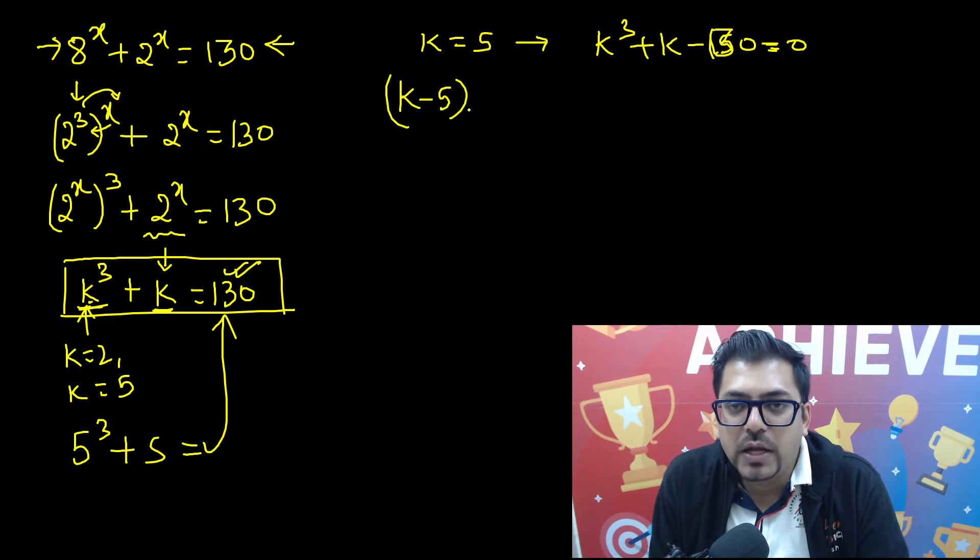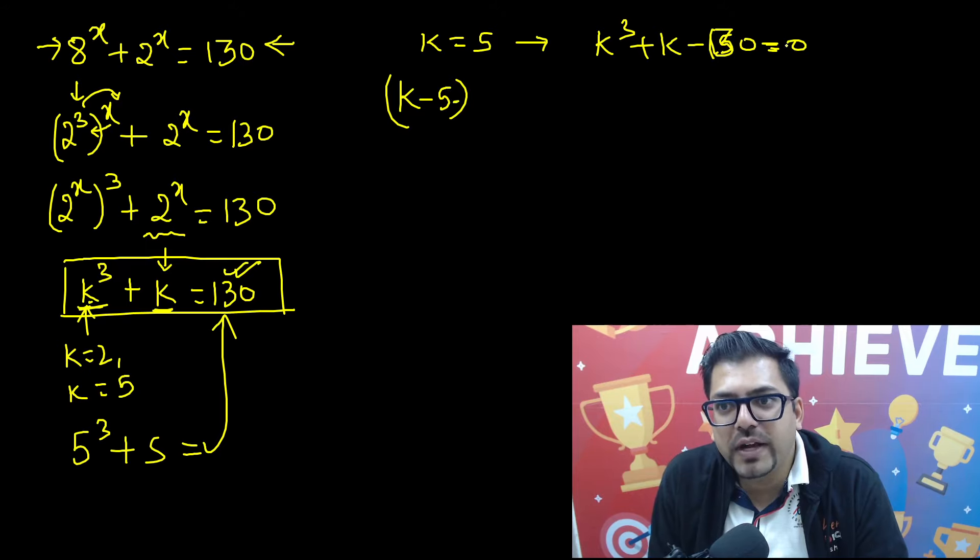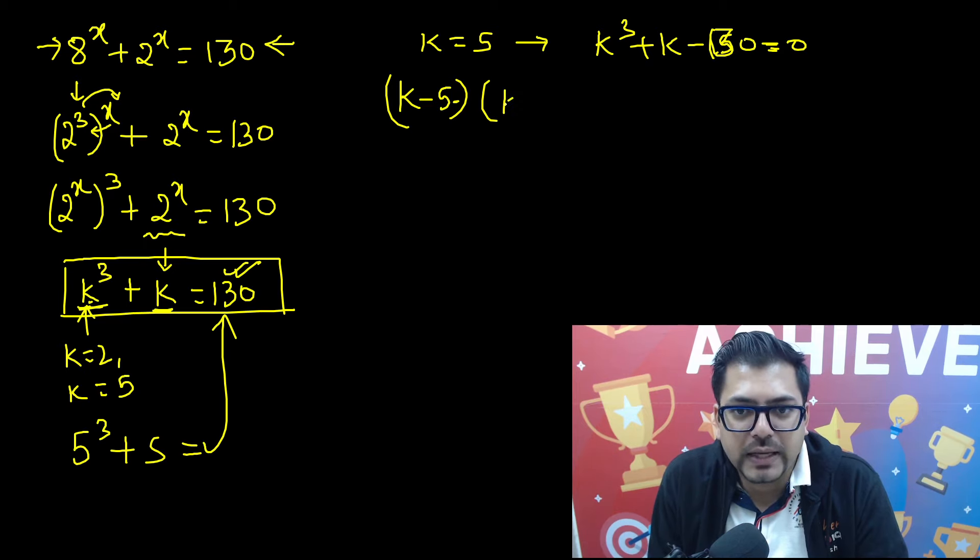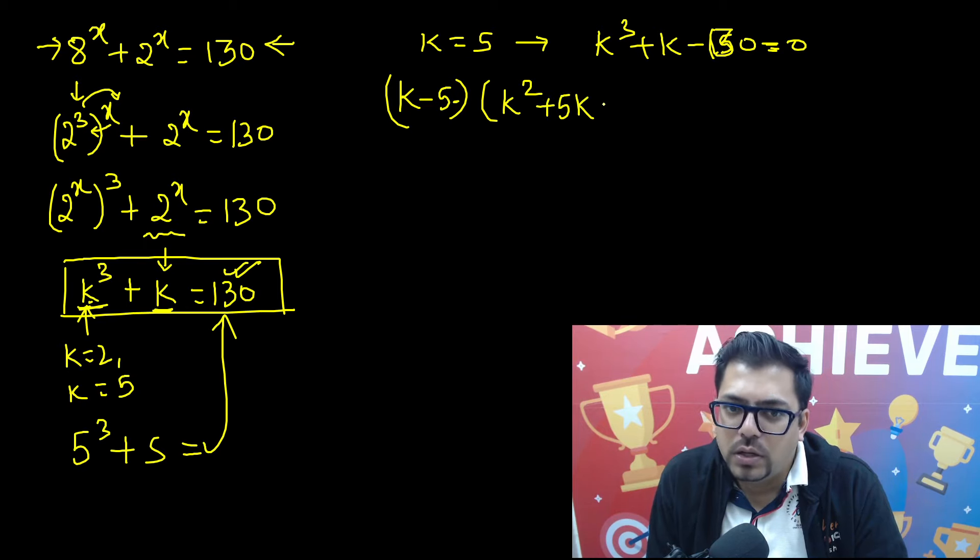Using this k minus 5, we need to divide this cubic equation. So if we divide k minus 5 into this cubic equation, we'll get k square, k square minus 5k square, so this will be plus 5k, and then this is minus 5, so we will get plus 26. So we have got this. So you can factorize this cubic equation like this.